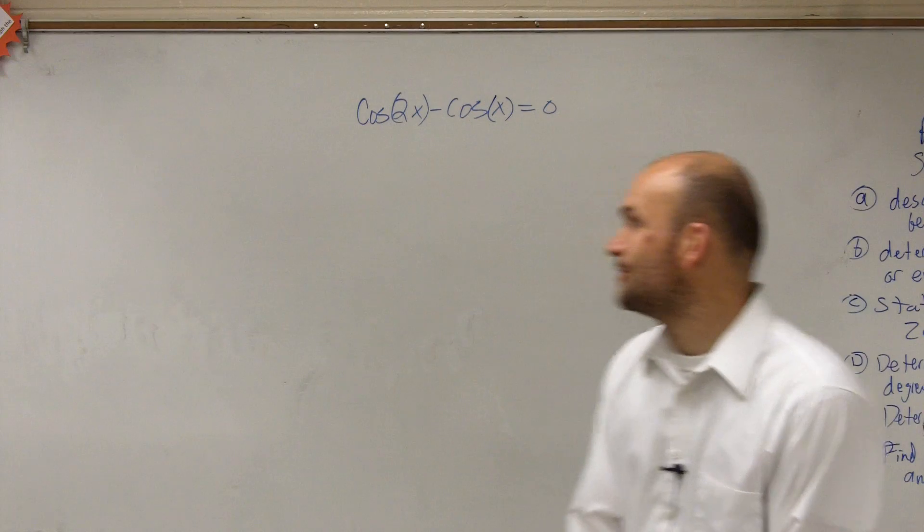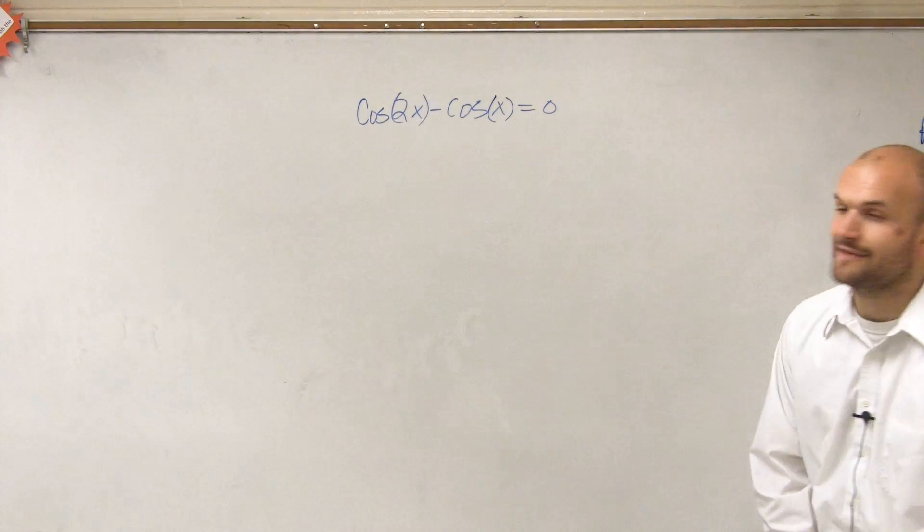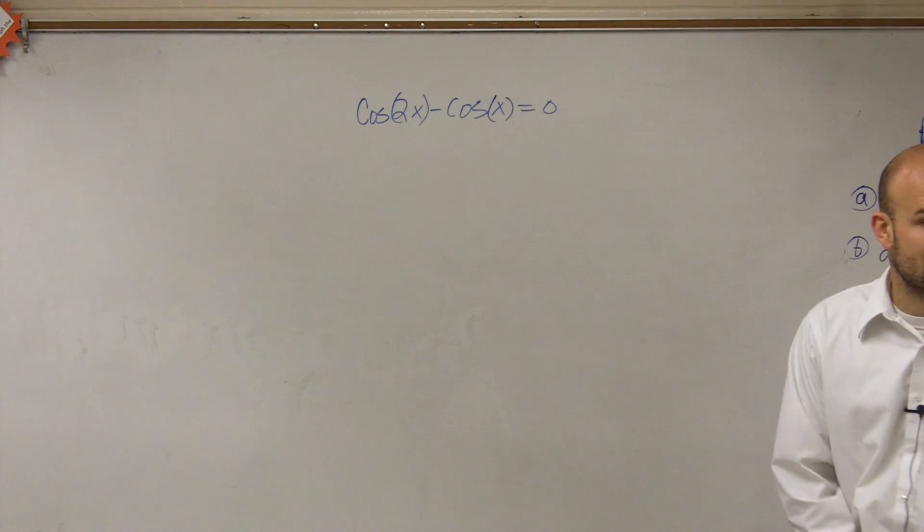Okay, so what we're going to go over with this, ladies and gentlemen, is that I have the cosine of 2x minus cosine of x equals 0.